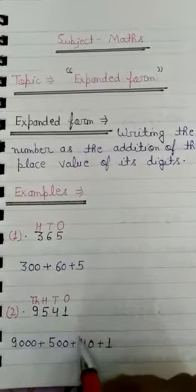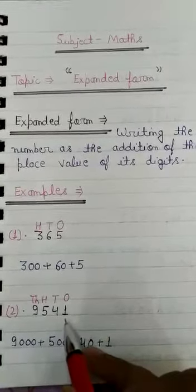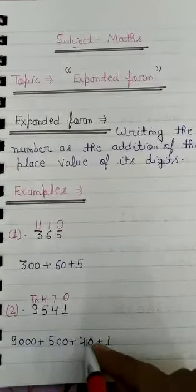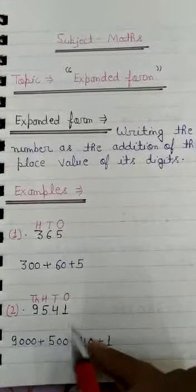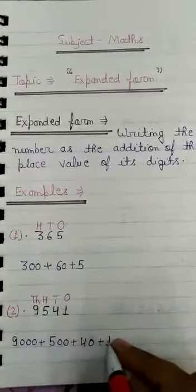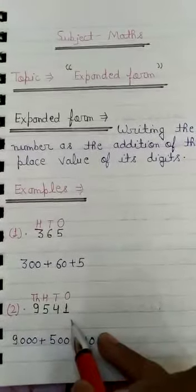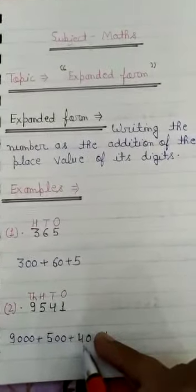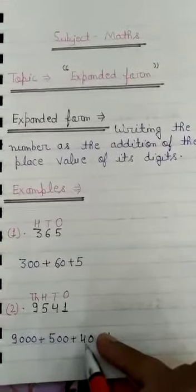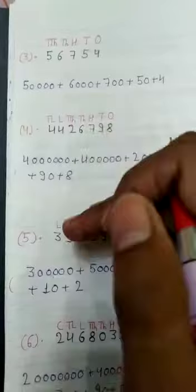Then 4. We will write 4. How many numbers? 1 number. Then we will write 1 zero — so 40. Then 4. After 4 no numbers. Then we write no zeros — just 4. So 9554 = 9000 + 500 + 40 + 4.